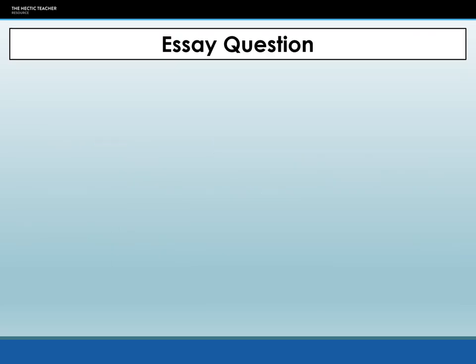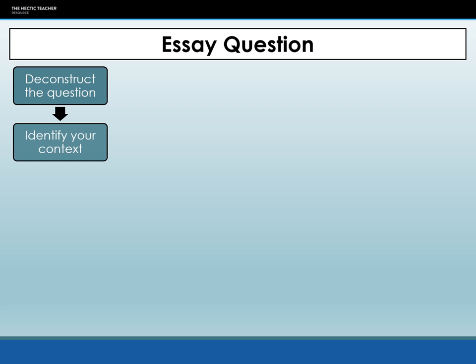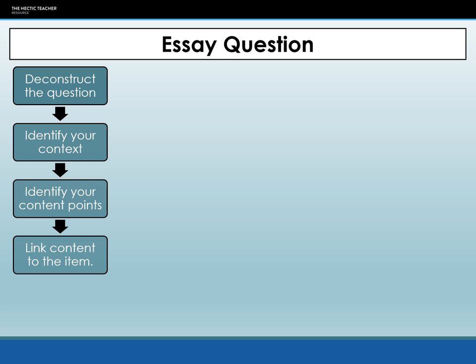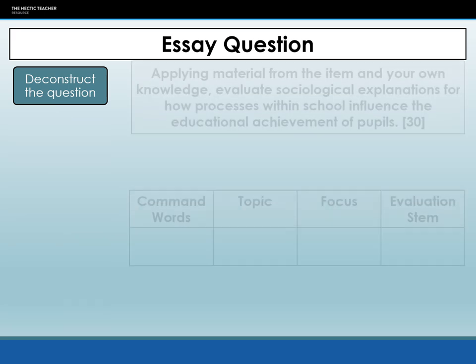Next up is our essay question. Just as with essay questions previously, we're going to deconstruct the question, making sure you're clear on what you're being asked to do, how you know it's a relative importance question, and what your evaluation is going to look like. Then we'll look at context — so our opening to our paragraph, whether it's definition, background or trend — then our content points, linking those points to the item. Finally, coming to an answer.